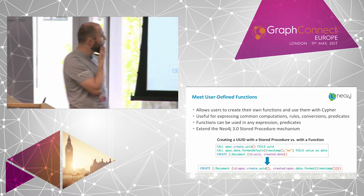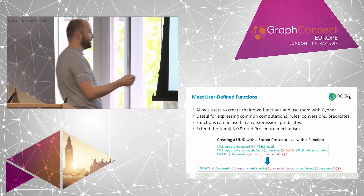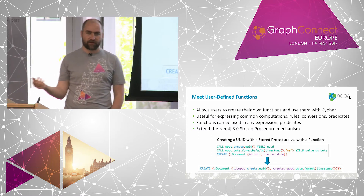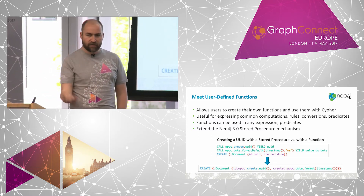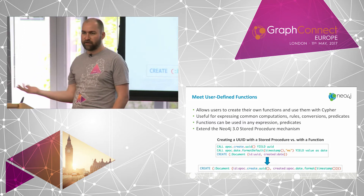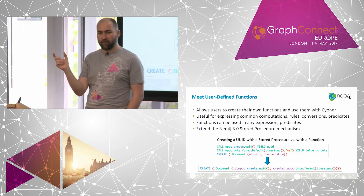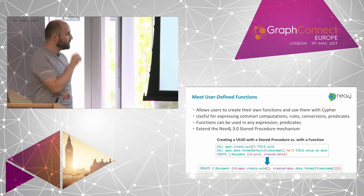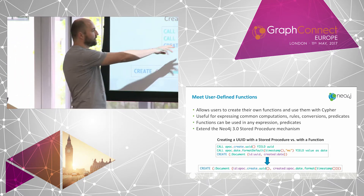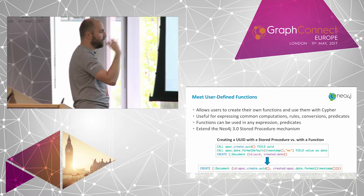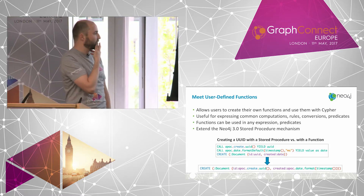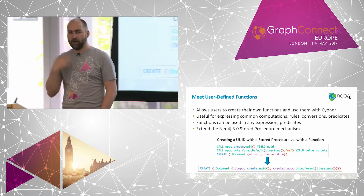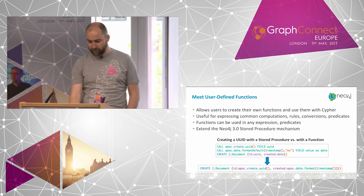Just as a recap: going from procedures to functions is quite helpful, because user-defined functions can be used in any expression context — any math expression, string expression, but also in predicates. So they are much more convenient to call, because it's like a built-in function. This was the old syntax in 3.0 where you had to call a procedure to achieve, for instance, a UUID and time conversion. Fortunately, now these are all functions and you can call them inline, which is much more convenient.